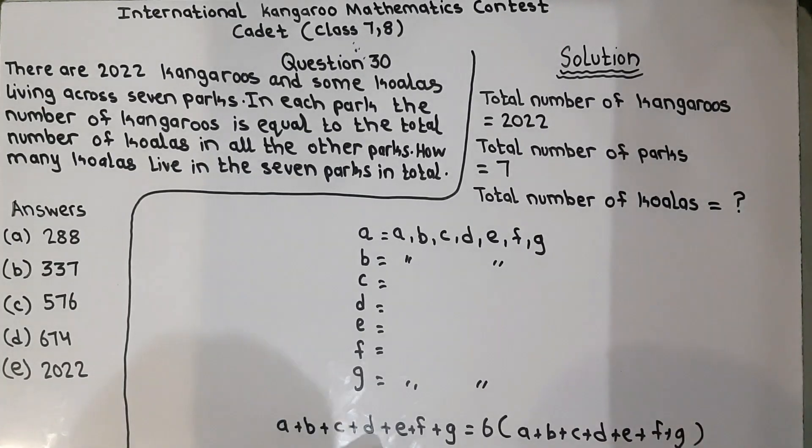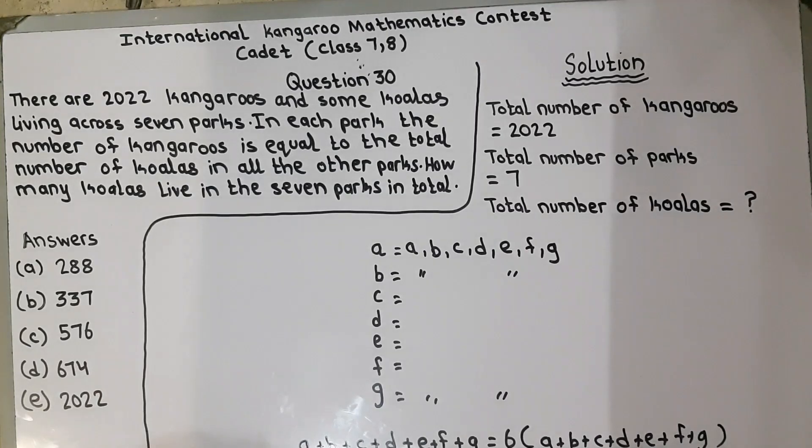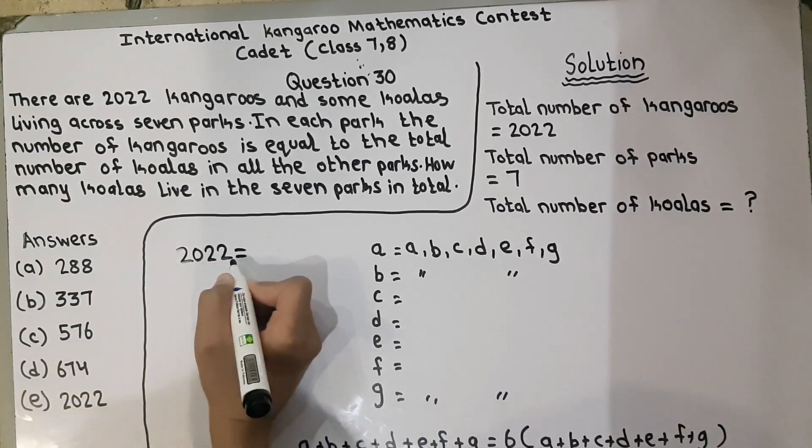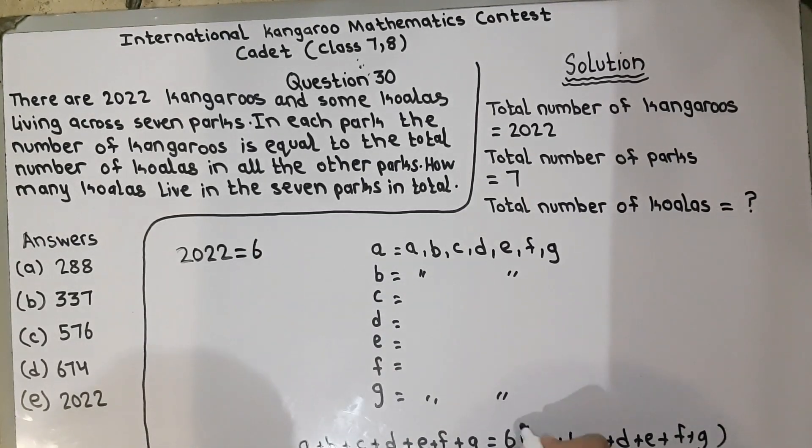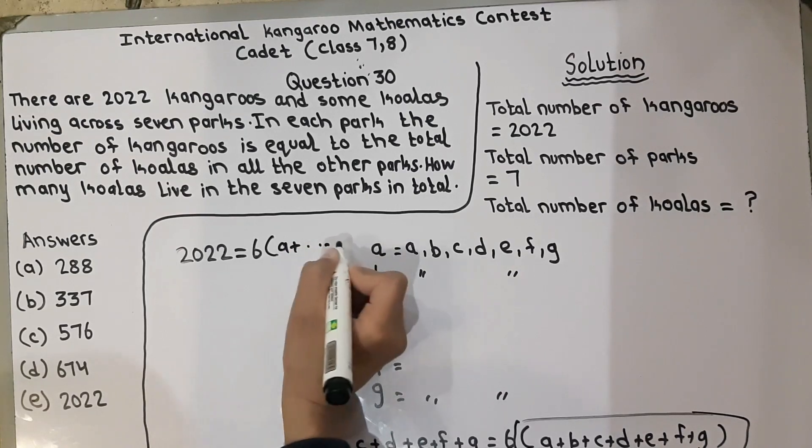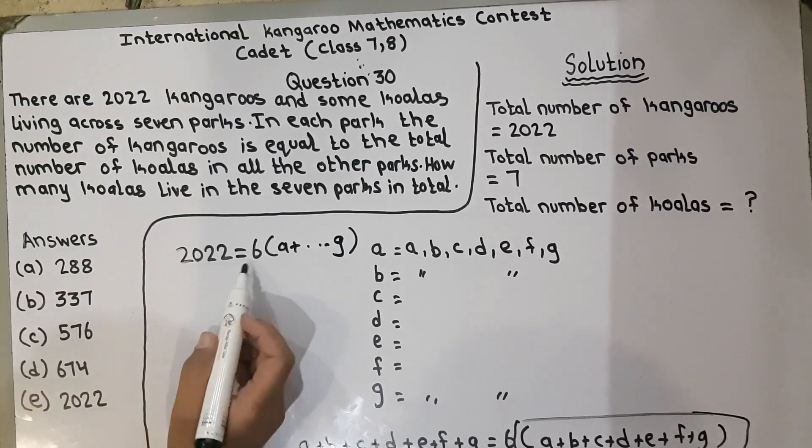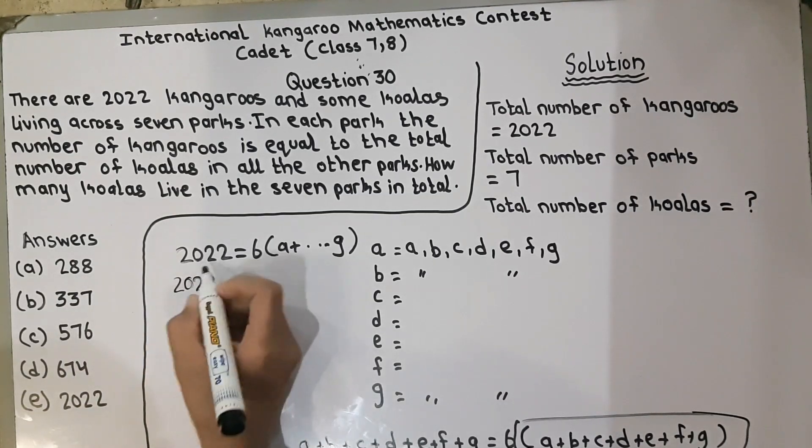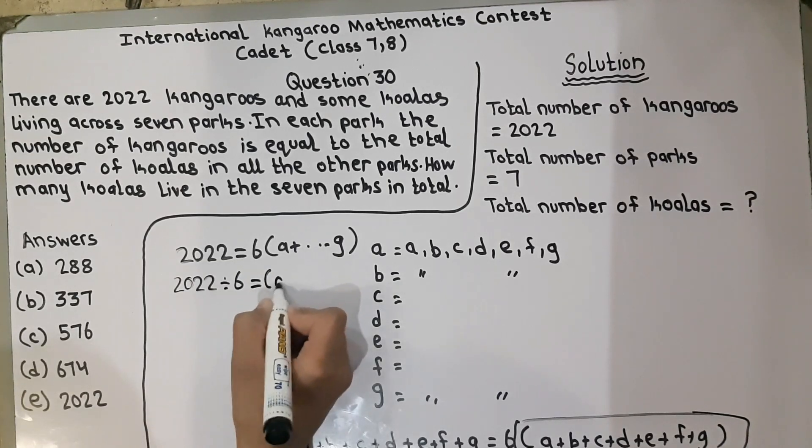We also know that A plus B plus C plus D plus E plus F plus G is also equal to total number of kangaroos, which is 2022. So, 2022 is equal to 6 times this whole statement. Here 6 is multiplying with these alphabets. If we take it here, it will divide: 2022 divided by 6 equals A plus G.